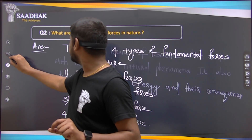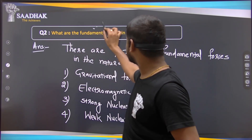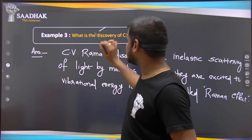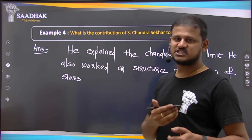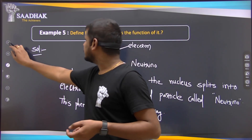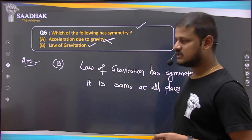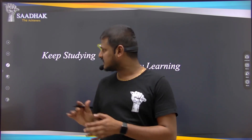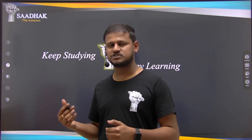So we covered six questions in the physical world chapter: What is physics? What are the fundamental forces of nature? What is the discovery of C.V. Raman? What is the contribution of S. Chandrasekhar to physics? What is beta decay? And which of the following has symmetry — the law of gravitation. With this, the first chapter on the physical world is complete. We'll meet in the next class with the units and dimensions chapter. Thank you guys, bye.